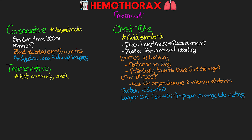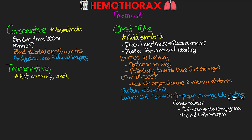One of the reasons placement is important is because if we end up having a hemothorax that clots and is not well evacuated, we're at risk for a couple of complications. The patient can potentially develop an infection and a collection of pus — something we refer to as an empyema. Improper drainage can also lead to pleural inflammation, preventing proper lung expansion. The clotted blood can attach the pleura to one another, leading to scarring — something we call fibrothorax.